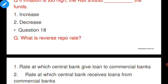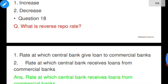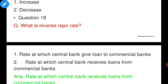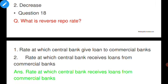Question number eighteen: What is reverse repo rate? Options: the rate at which the central bank gives loans to commercial banks, or the rate at which the central bank receives loans from commercial banks. Option B is correct. Repo rate is the rate at which the central bank gives loans to commercial banks for a shorter period; reverse repo rate is the rate at which commercial banks give loans to the central bank.